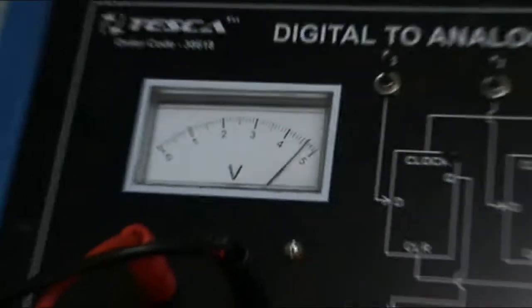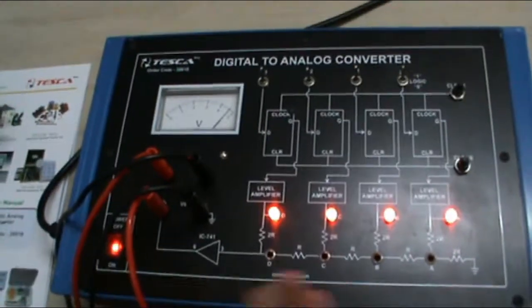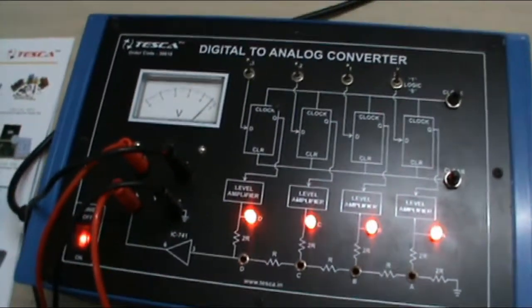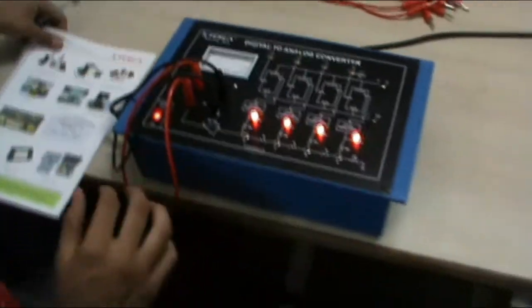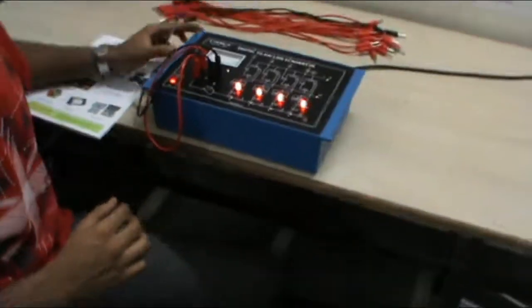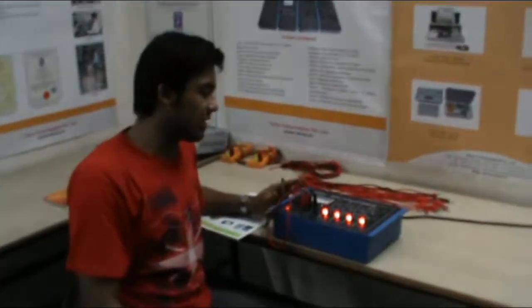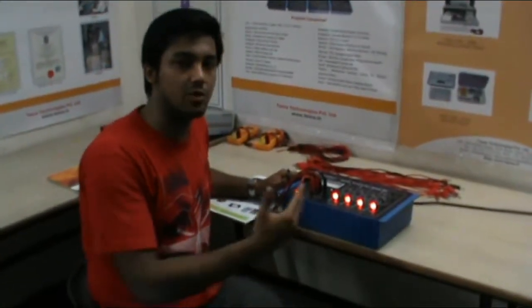According to this, record all the voltage from 0000 to 1111. You will get the desired results according to the table given in the manual. This is the working of digital to analog converter and calculate all the values and convert it from digital to analog.